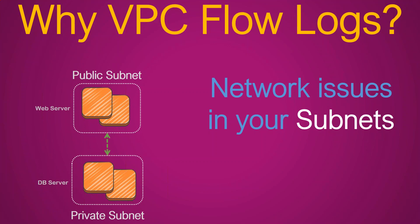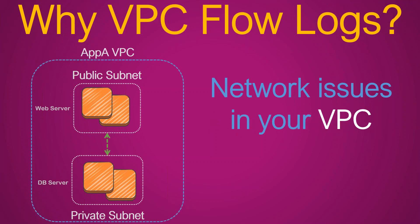Another scenario that quite often happens is you have a VPC collectively serving a business application — let's say an application VPC — and you are having issues with the whole VPC itself. Then you can configure VPC flow logs for the entire VPC. So these are different levels of granularity Amazon offers you: you can troubleshoot issues using network-level information, subnet-level information, or VPC-level information.